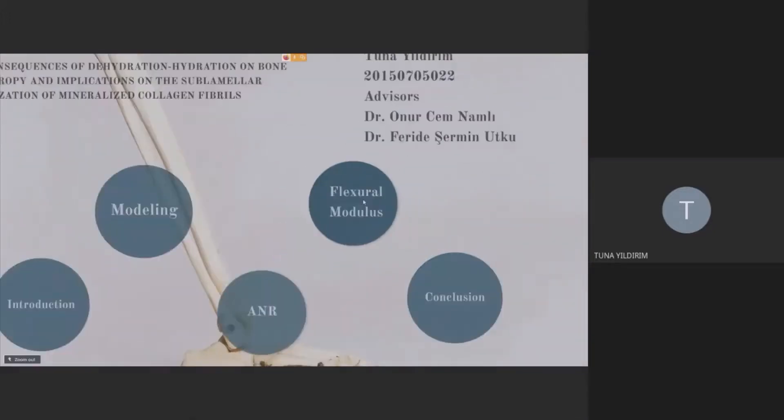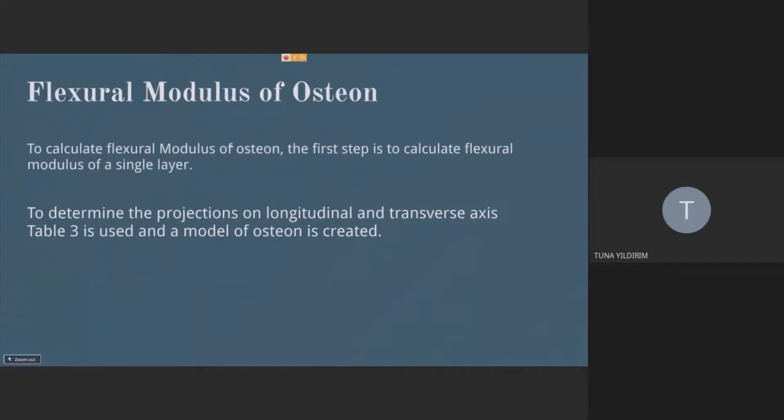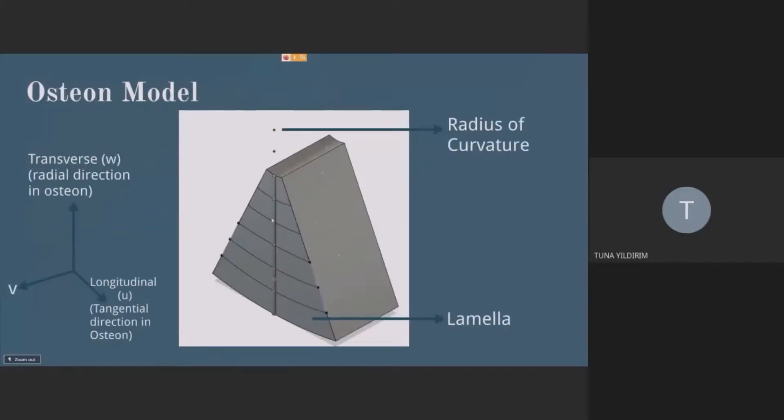And after that, I wanted to calculate the mechanical property flexural modulus on osteon. I did it for 5 sublamellas. And I used the anisotropic ratios that I've calculated before to calculate that. Here's my osteon layer by layer. These are my lamellas.